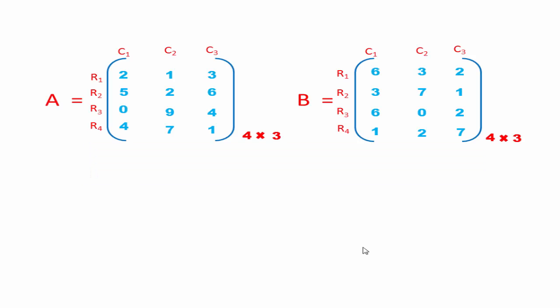Here we take two matrices, Matrix A and Matrix B. A has four rows and three columns. These are the rows of the matrix and these are the columns of the matrix. This is the first row, this is the second row, this is the third row, and this is the fourth row. This is the first column, this is the second column, and this is the third column. So the order of the matrix is 4 cross 3. Matrix B also has four rows and three columns. The only condition is the order of both matrices will be the same — means number of rows and number of columns will be same.